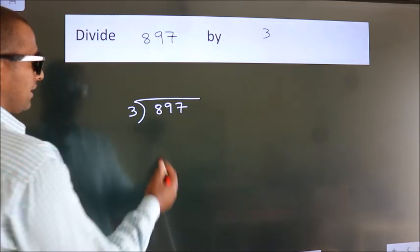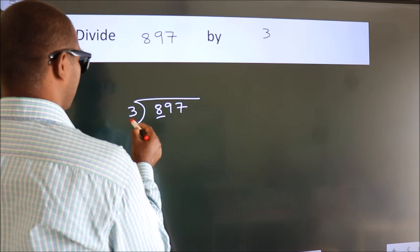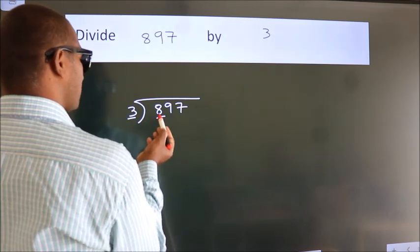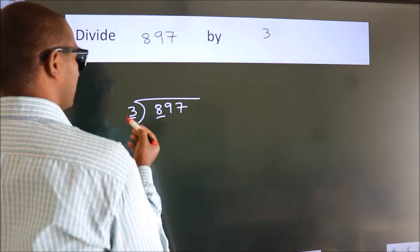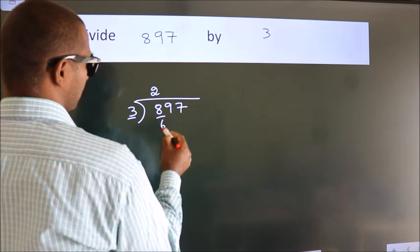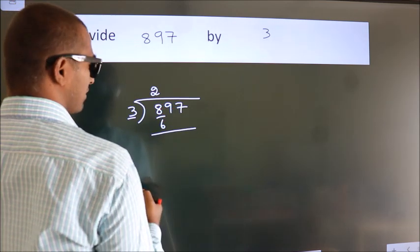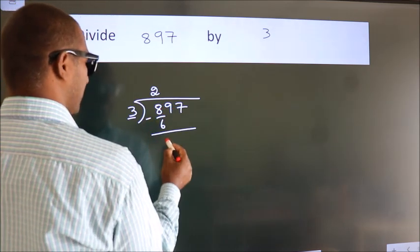Next, here we have 8, here 3. A number close to 8 in 3 table is 3 2s, 6. Now, we should subtract. We get 2.